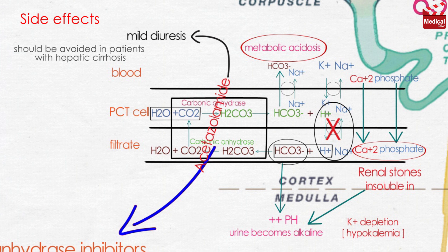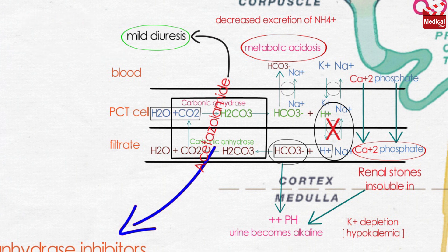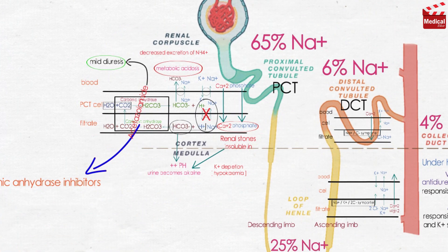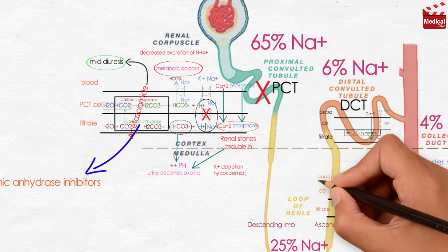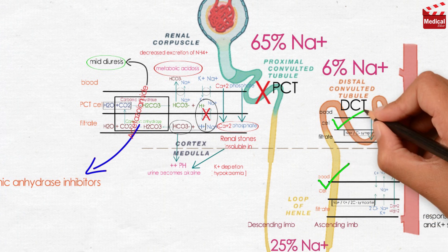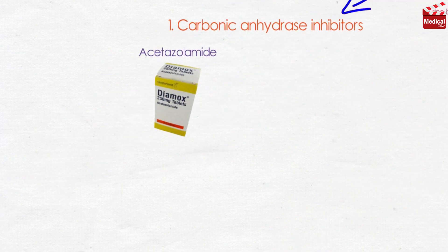The drug should be avoided in patients with hepatic cirrhosis, because it could lead to decreased excretion of ammonia, so ammonia may reach the brain causing encephalopathy. Carbonic anhydrase inhibitors have a mild diuretic effect, as sodium that is not reabsorbed from the PCT can be reabsorbed from both the loop of Henle and DCT. So they are used for their other pharmacologic actions.